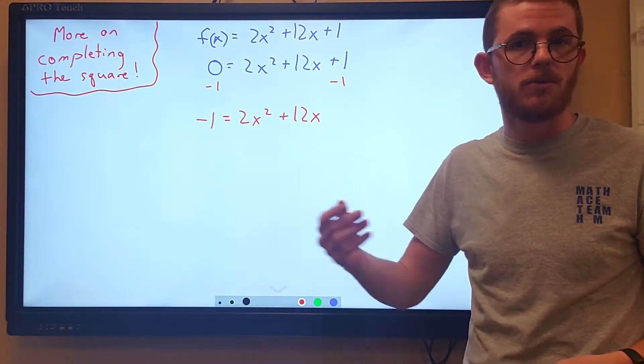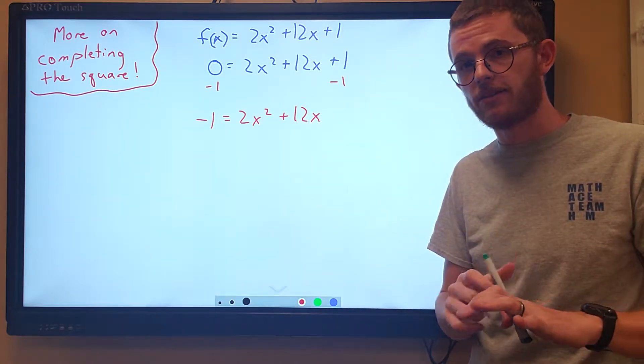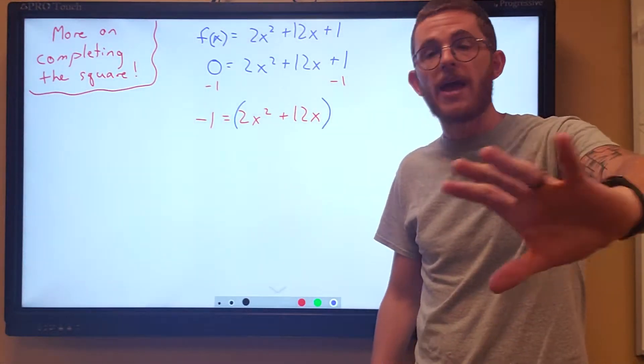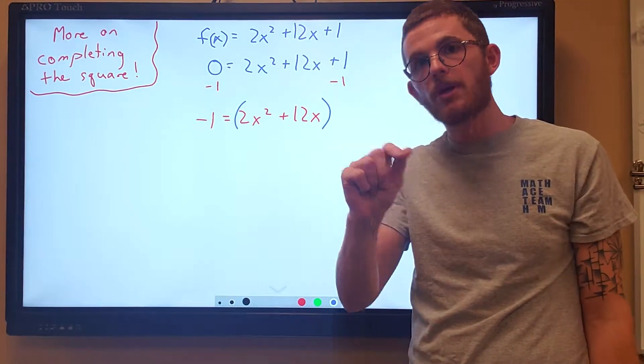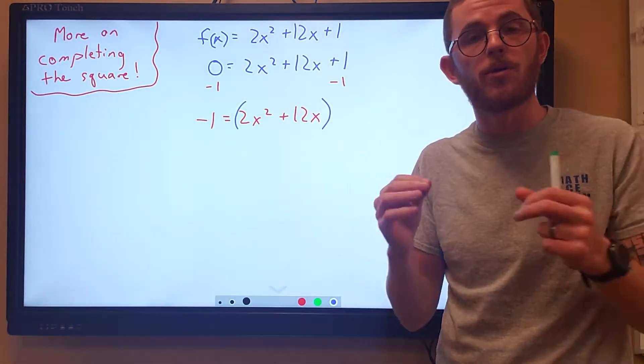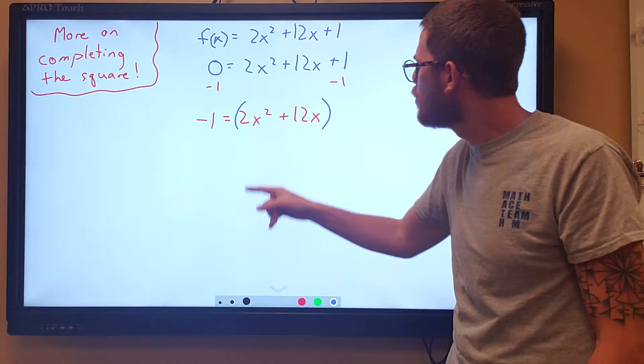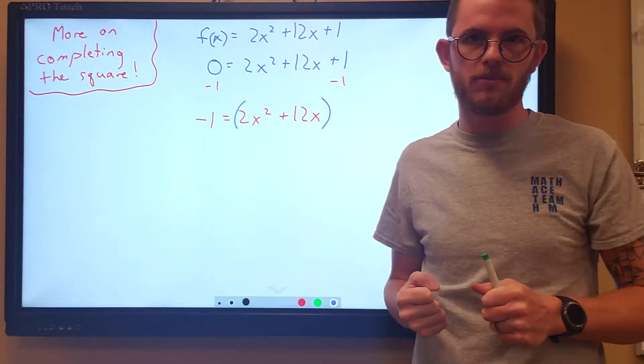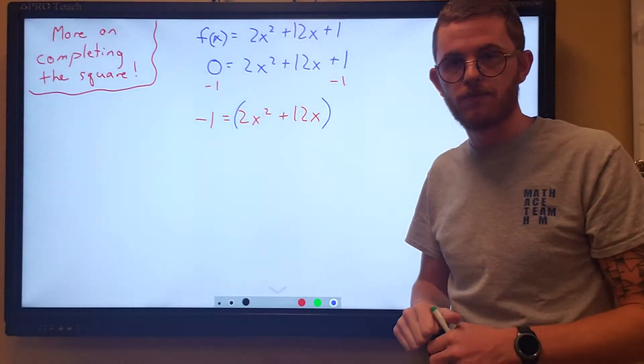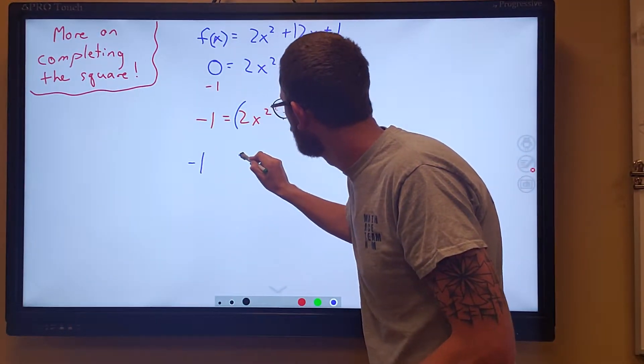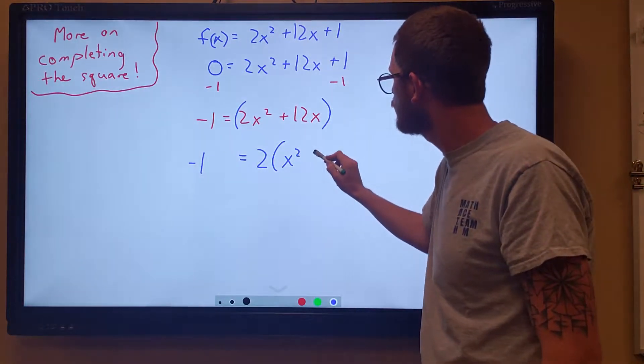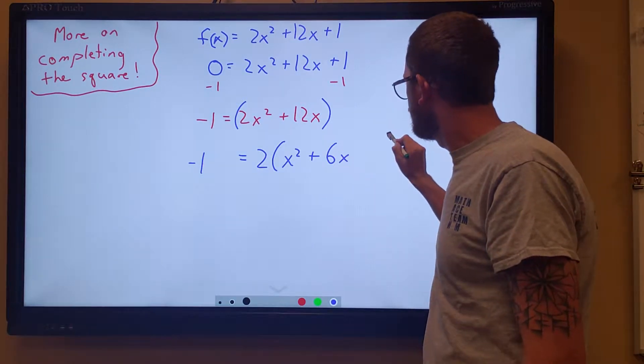And when we complete the square, we're getting in those steps, we group the x's. Here we go, group the x's. But we have to remember it's different a little bit when we have a leading coefficient other than a 1. Because there is a 2 right there, and completing the square needs that to be a 1. So we're going to force that to be a 1 by factoring out a 2. Okay, so the left side is still negative 1. Over here I'm going to factor out a 2, leaving me with x squared plus 6x.